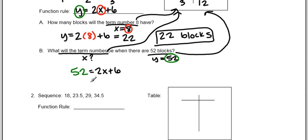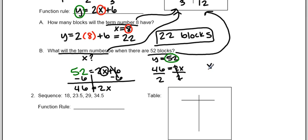So now I have 52 equals 2x plus 6. To find out what x is, I need to solve for x. I need to get it alone. The first thing I need to do is subtract 6 on both sides. So 52 minus 6 gives me 46 equal to 2x. So I have 46 equals 2x. And then I must divide by 2. So x equals 23.